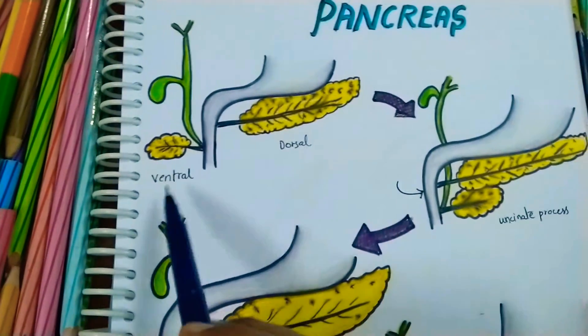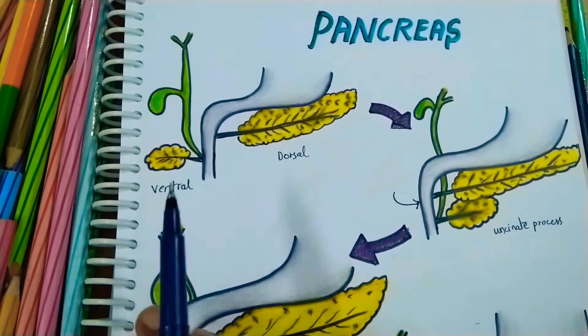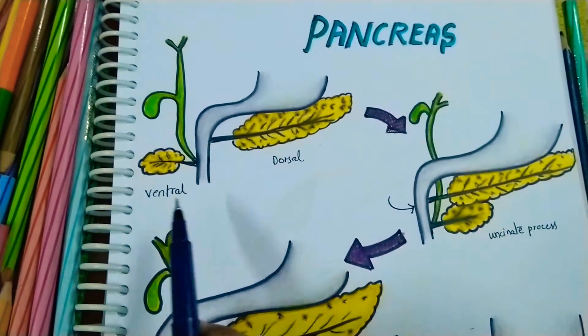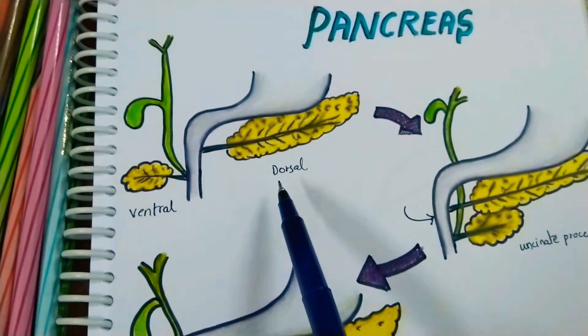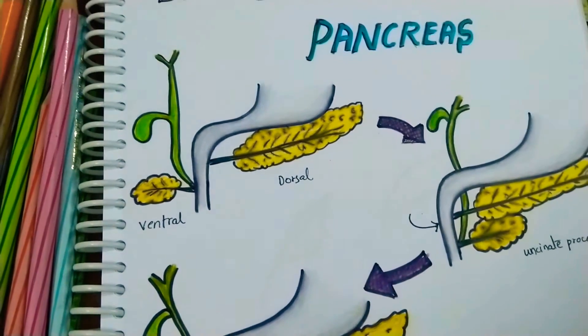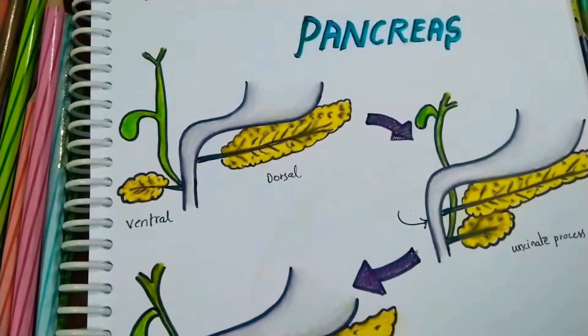The ventral pancreatic bud develops with the common hepatic bud for the liver and bile duct. The dorsal pancreatic bud develops more proximally, directly from the foregut.